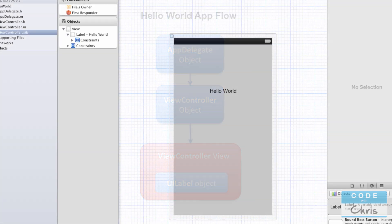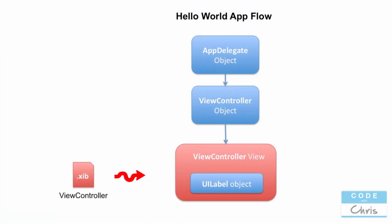You must be wondering how does the viewcontroller.xib file become an object. Well, the xib file is actually a special Interface Builder file format that gets interpreted by Xcode, and then a view object is created from that based on what you've specified through Interface Builder. That view object also resides in memory.